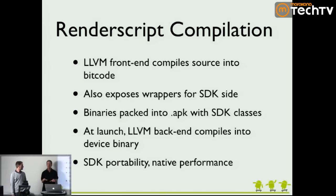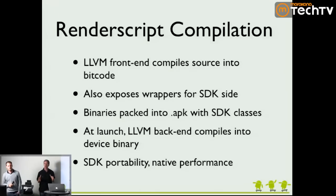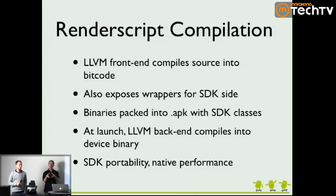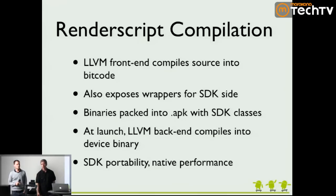For compilation, we use LLVM — an open source compiler and runtime — which stands for Low Level Virtual Machine. We use two pieces of LLVM: one front end and one back end. On the front end, we compile the RenderScript source code you write into bit code, and we pack that binary into the APK with the rest of your SDK code. When your application launches on the device at runtime, we do the back-end LLVM step: there's a small LLVM compiler on the device that compiles the bit code into device-specific native code. This is how you get portability — you're shipping device-independent bit code, and at runtime it knows whether it's an ARM architecture and compiles to that. The compiled code is cached.